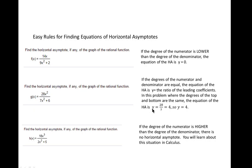Here, the equation of the horizontal asymptote is going to be y equals 28 over 7, and 28 over 7 is 4, so the equation of the horizontal asymptote will be y equals 4.